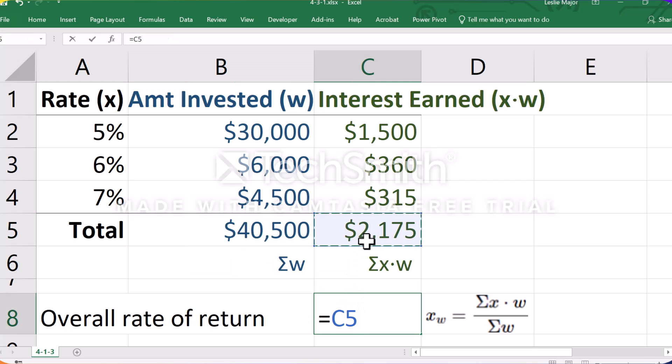And to get the overall rate of return, take the total interest earned, divide by the total amount invested. Or if you will, that's like taking the sum of the x times w's, the $2,175, the actual values times their weights, and dividing by the sum of the weights, which is the dollar amounts invested.